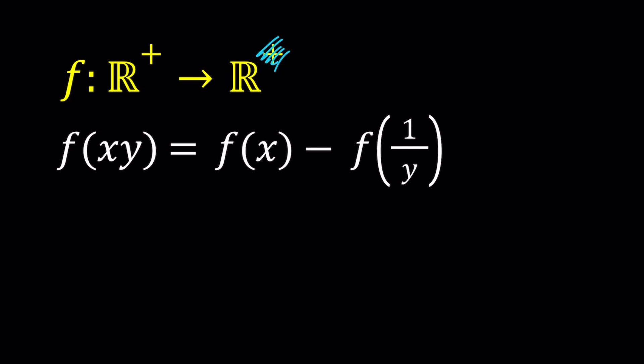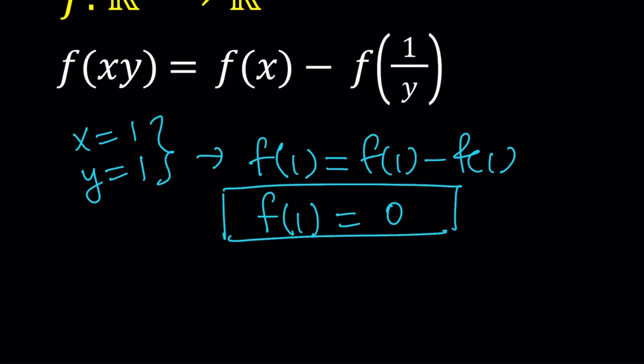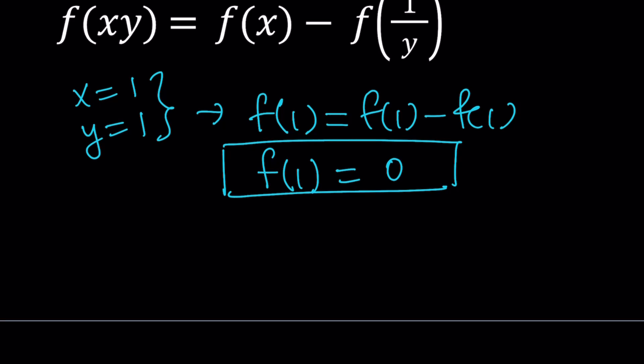How about replacing x and y with 1? So let x equal 1 and y equal 1. Now this gives us f of 1 equals f of 1 minus f of 1. Something interesting. But f of 1 minus f of 1, regardless of the value of f of 1, is 0. So this implies that f of 1 is equal to 0. Nice.